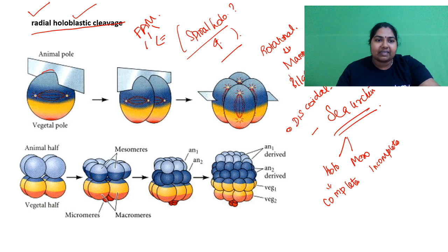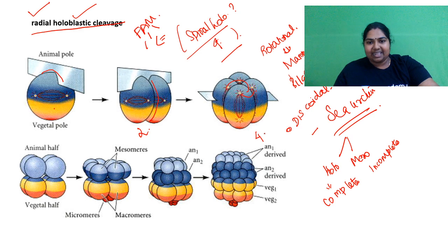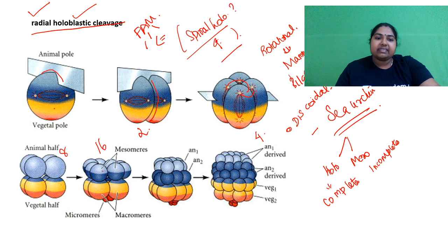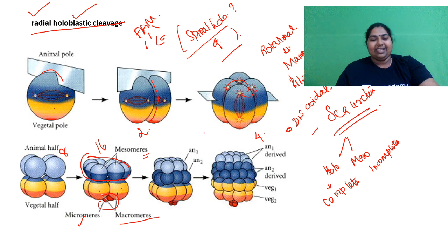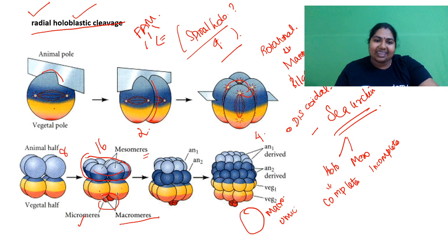So if you take this plane — it is making a full cut. This one cell is becoming two, two is becoming four, four is becoming eight, eight is becoming sixteen. At the sixteen-cell stage, eight cells are of similar size — those are called mesomeres. The big cells are called macromeres, and the small cells are called micromeres. The even-shaped cells are called mesomeres.